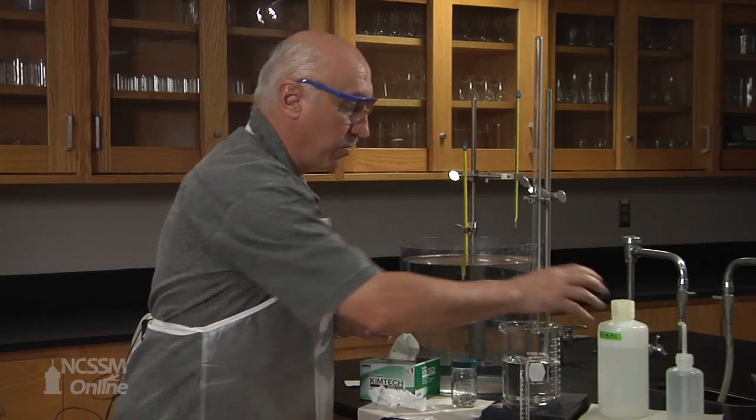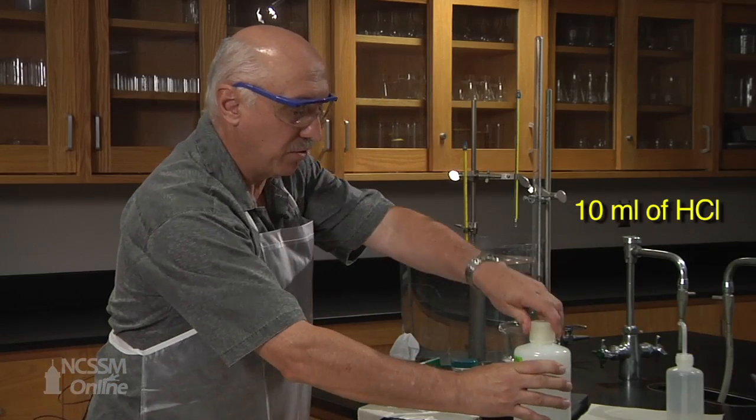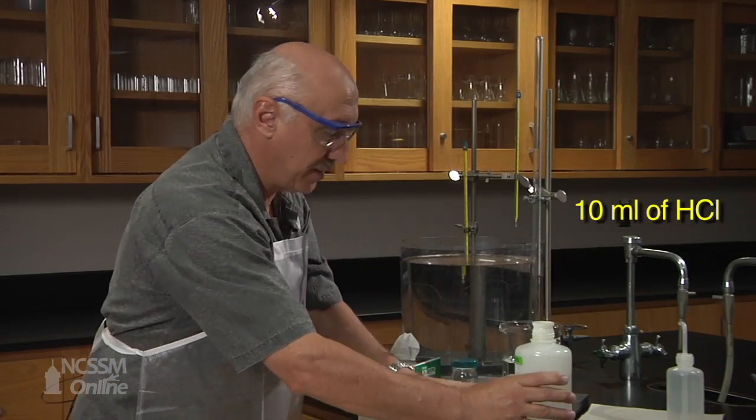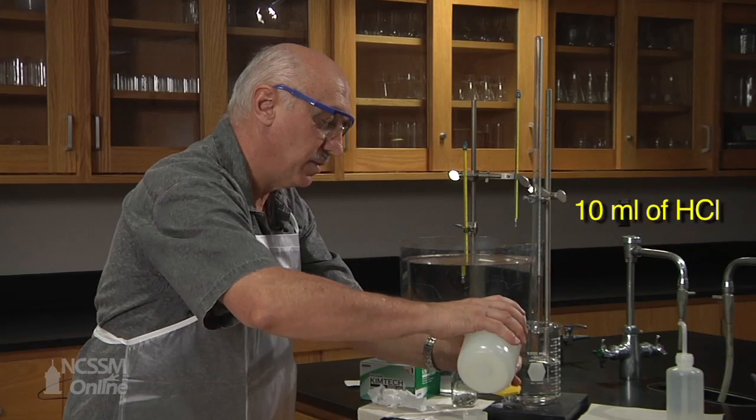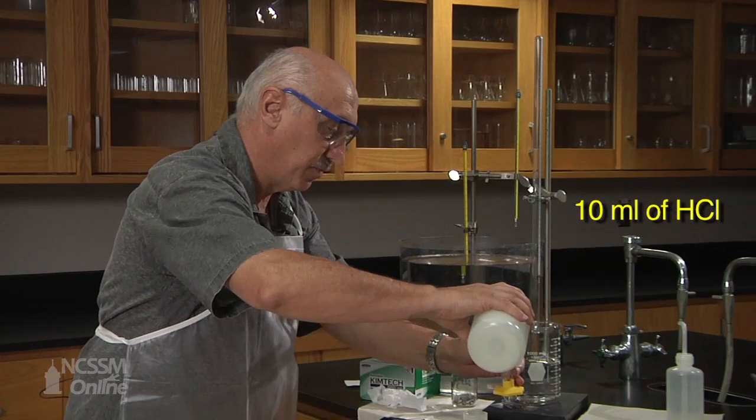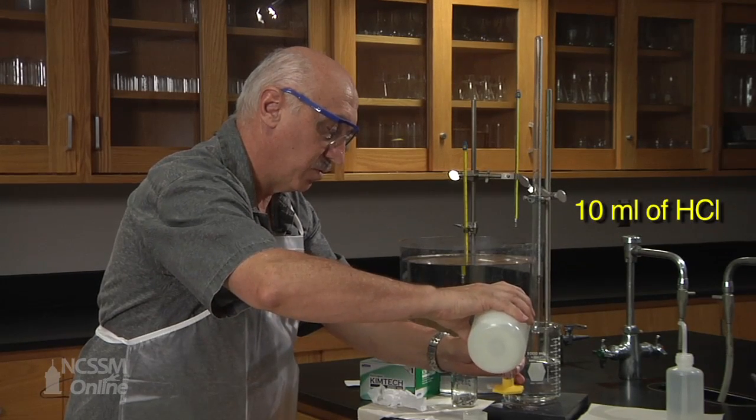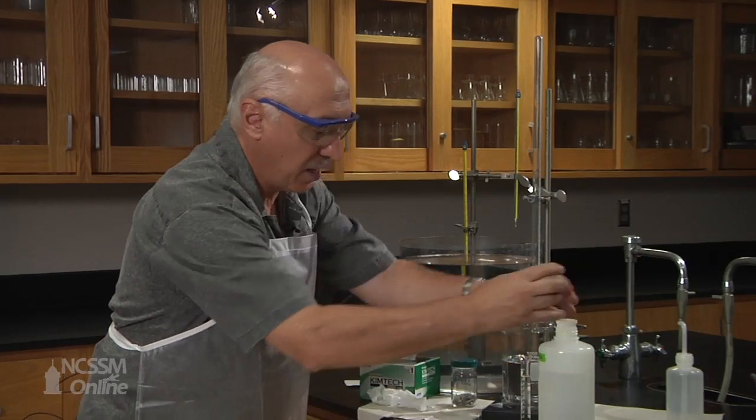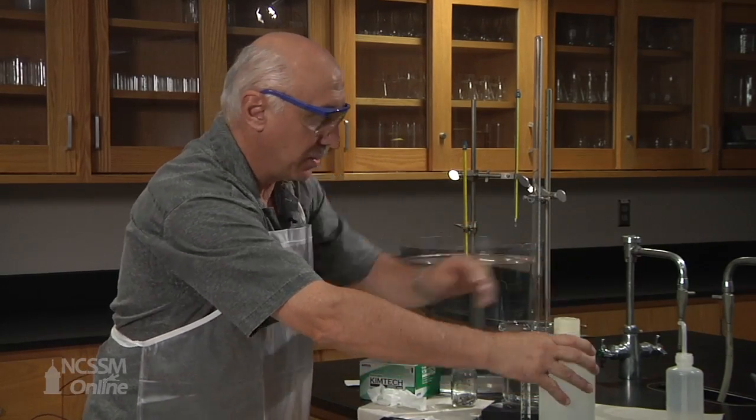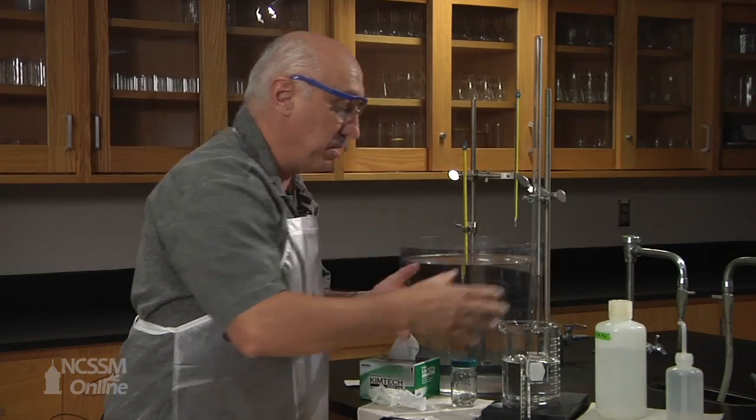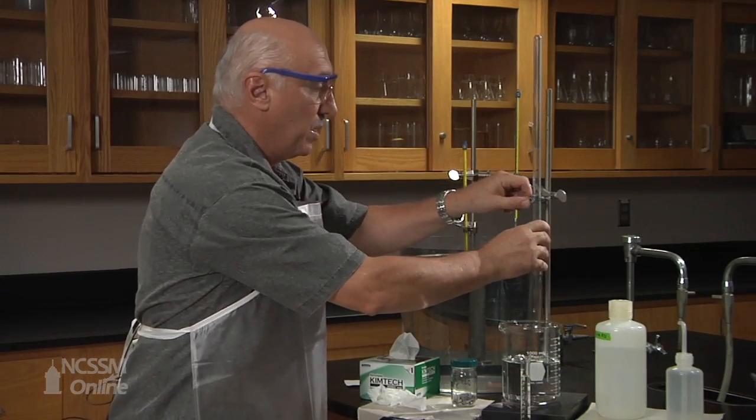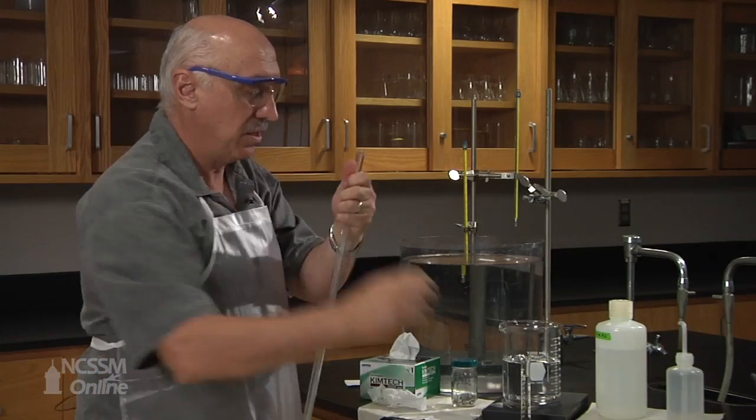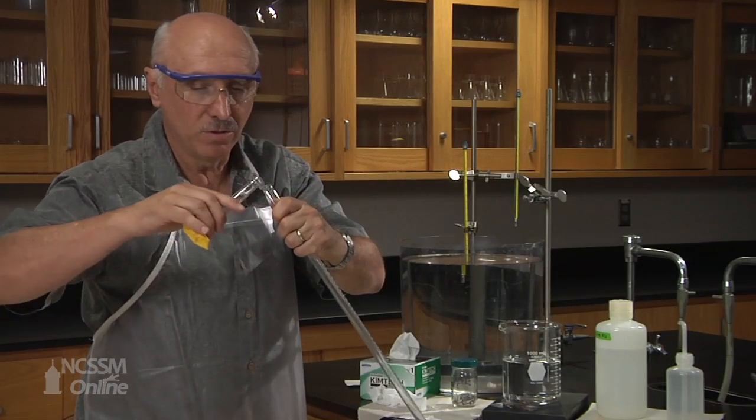So now we're going to pour our 10 mils of hydrochloric acid. Hydrochloric acid in this reaction with magnesium is the excess reagent. So that way we ensure that all of the magnesium will react. Now, it's not absolutely necessary that it is 10 mils, approximately 10 mils. We will pour the 10 mils in our gas measuring tube.